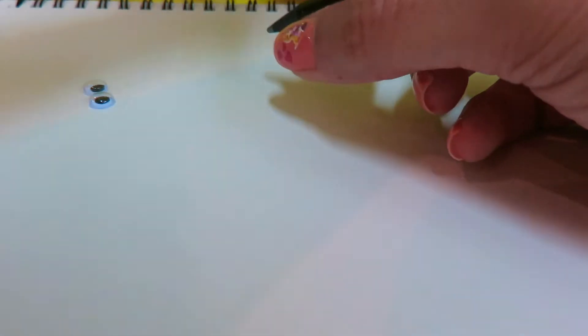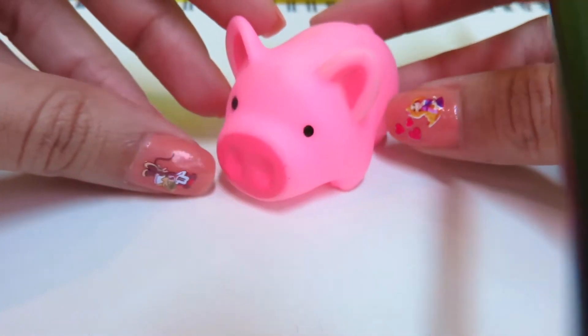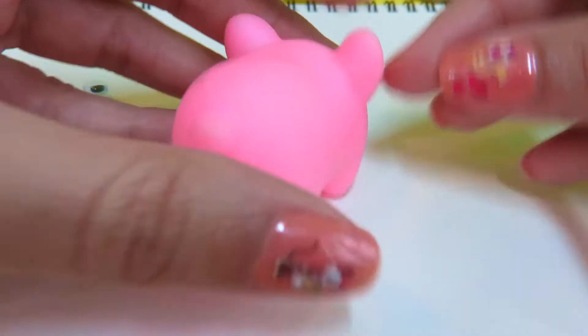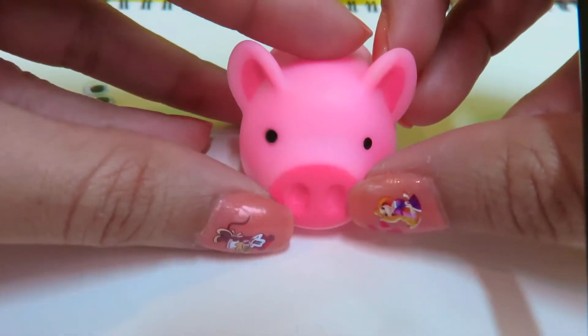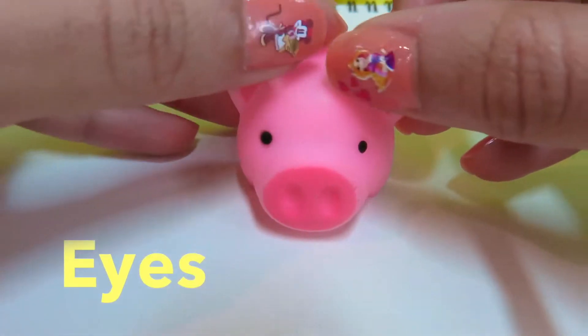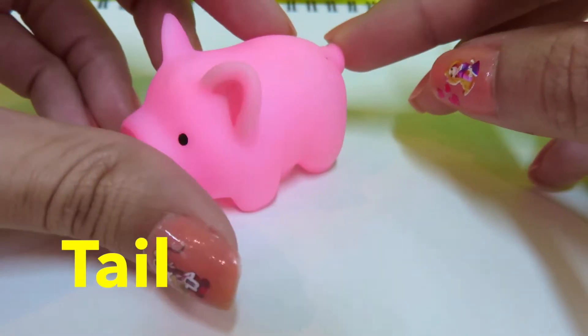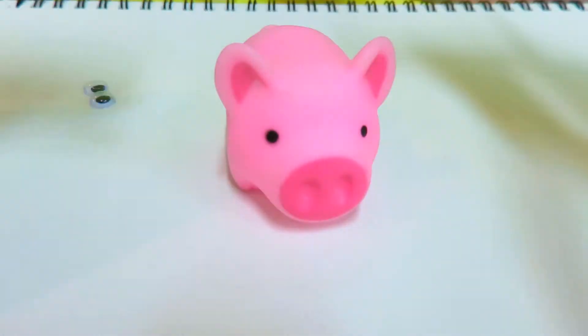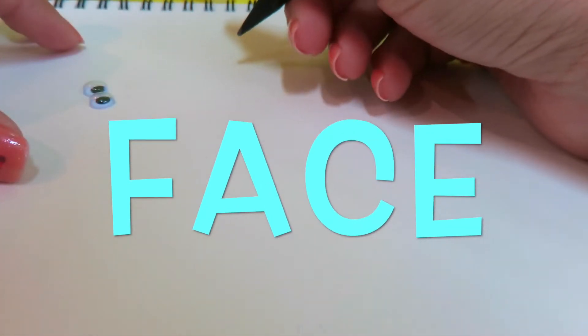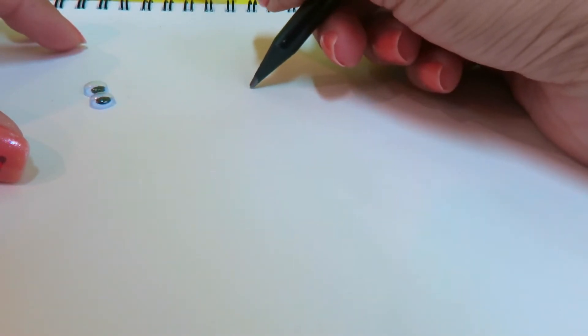Now, Peppa Pig and George Pig are actually pigs. So they have a big nose, these eyes, these ears and a tail. Now, how do we begin? Let's draw the face first. Follow the shape that I'm making.